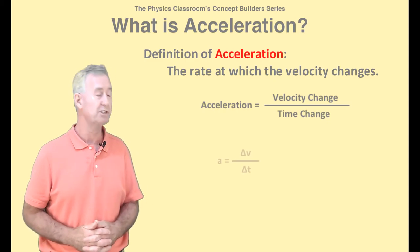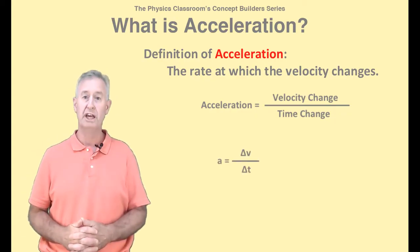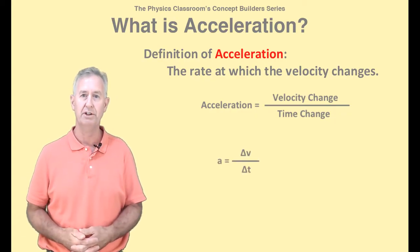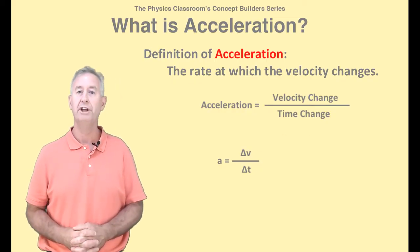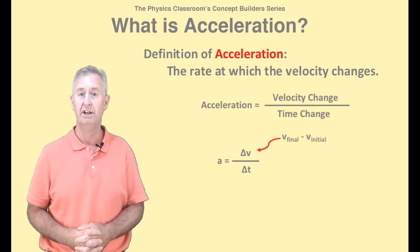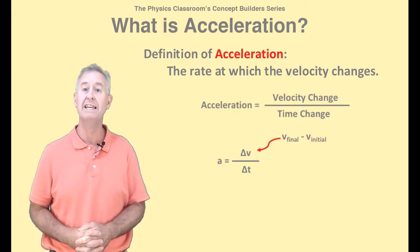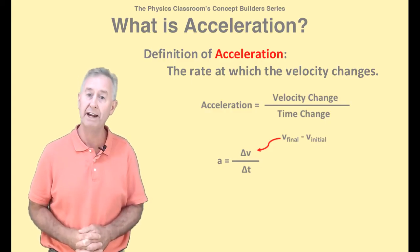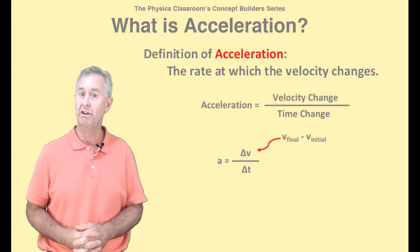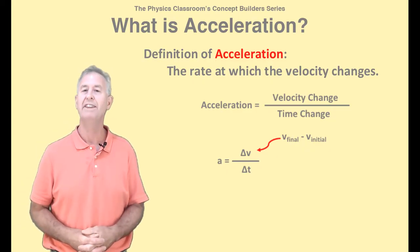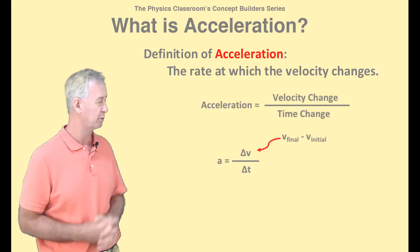If we rewrite this equation using symbols, we would say a for acceleration, equals delta v divided by delta t. The numerator here is the change in velocity, and it's calculated by subtracting the initial velocity from the final velocity. The denominator here is the time over which this velocity is changed, or the delta t that's associated with this delta v.